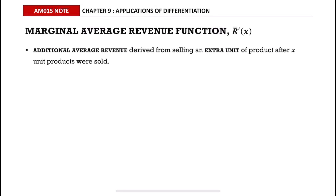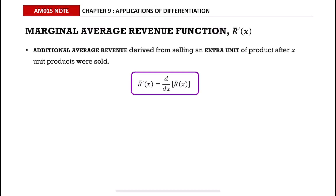The marginal average revenue function is denoted as R̄'(x). It is the additional average revenue derived from selling an extra unit of product after x units were sold. The marginal average revenue function equals the differentiation of the average revenue function.